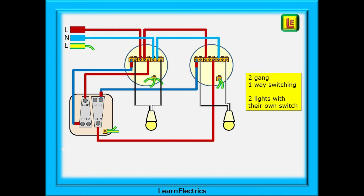We have our two-gang one-way switching and we have two lights, one for each switch. Notice that these switches are all two-way switches but we only require one-way switching. This is not a problem — we simply use the common terminal for each switch and the relevant L1 terminal as shown.